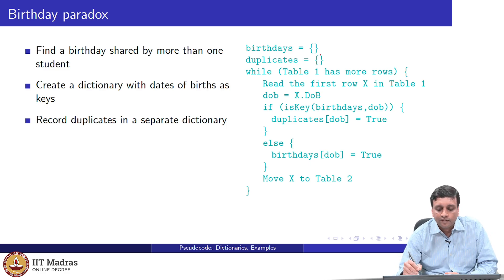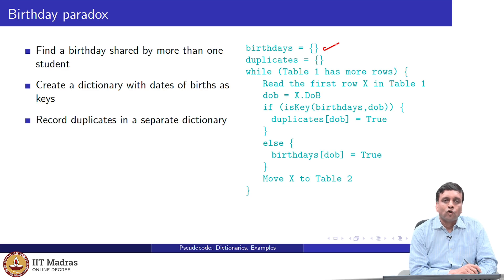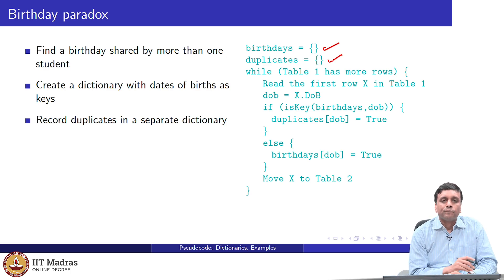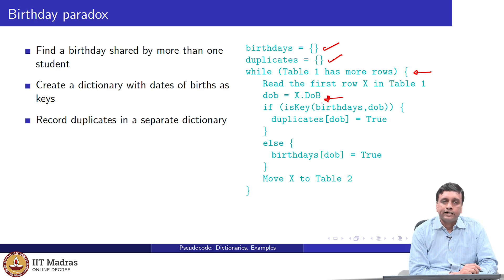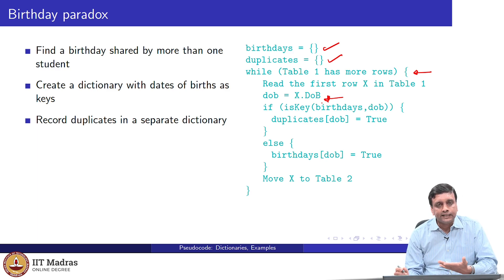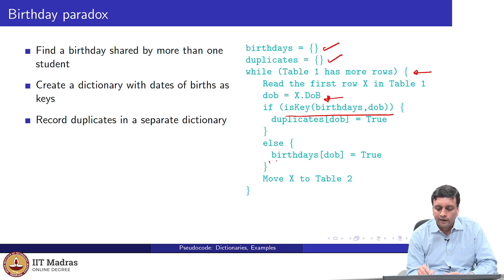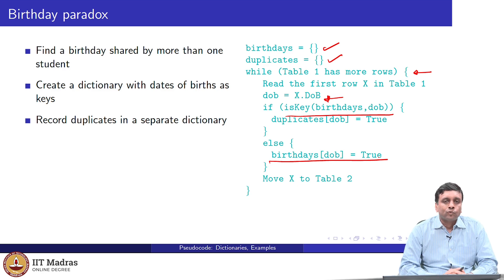We start with two dictionaries. The dictionary birthdays will store all the dates for which birthdays exist in our dataset. And duplicates will store all those dates of birth which occur more than once. Initially, they are both empty because we have seen nothing. Now we go through our scores dataset and pick up the date of birth on the card — x dot dob is the date of birth on the current card. We ask whether it is present or not. I check whether the date of birth has already been recorded; if it has not been recorded, I create an entry for it and just store the value true.